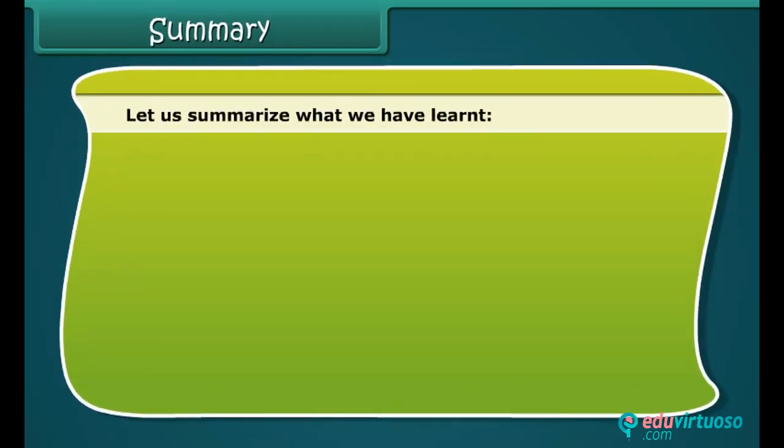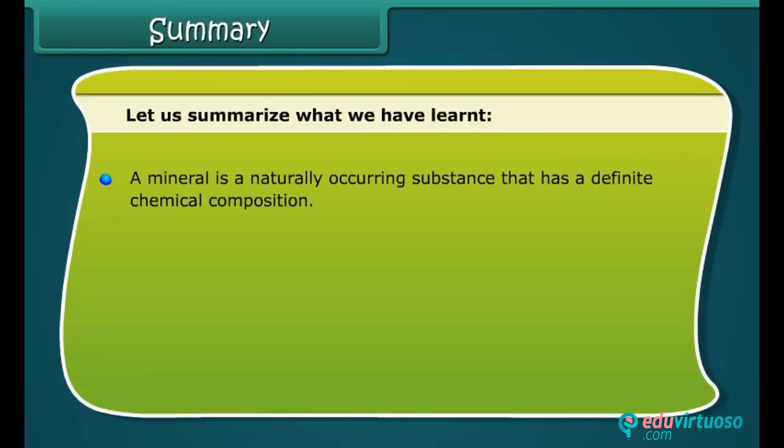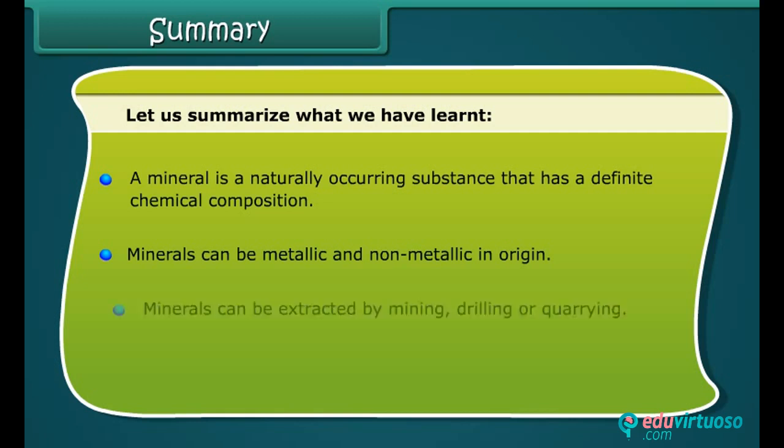A mineral is a naturally occurring substance that has a definite chemical composition. Minerals can be metallic and non-metallic in origin. Minerals can be extracted by mining, drilling, or quarrying.